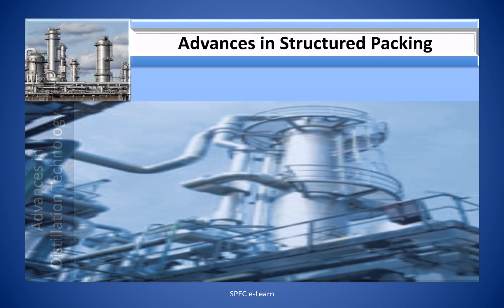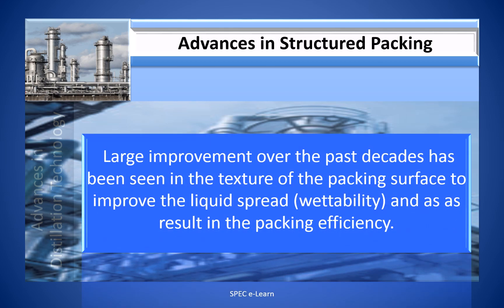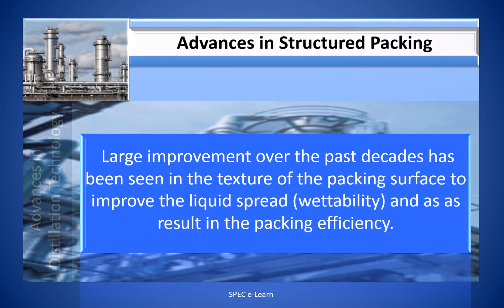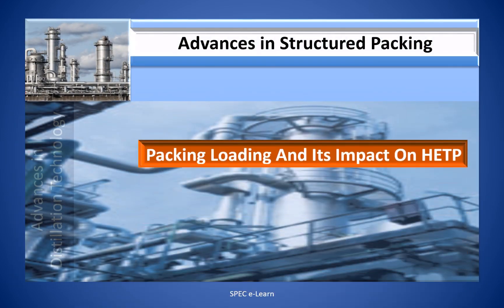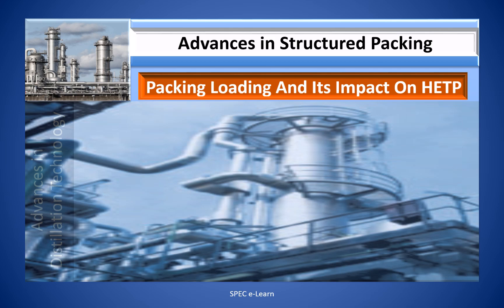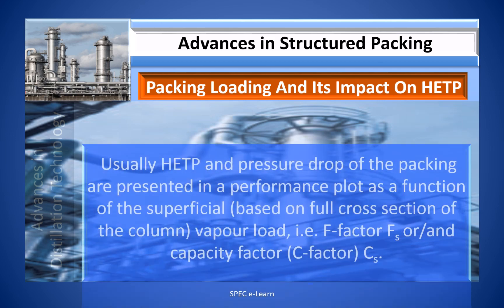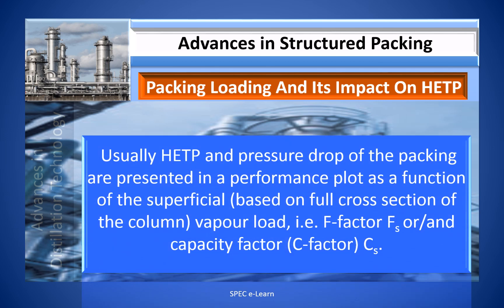Where is the improvement happening in structured packing advancement? Large improvement over the past decades has been in the texture of the packing surface to improve liquid spread — wettability — and as a result, in packing efficiency. HETP and pressure drop of the packing are represented in a performance plot as a function of superficial vapor load, which is either the capacity factor or C-factor Cs, or F-factor Fs.